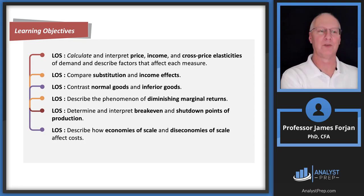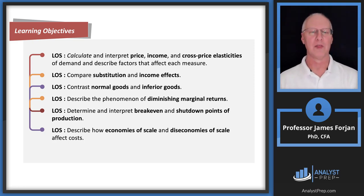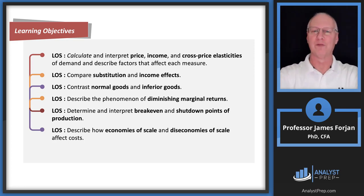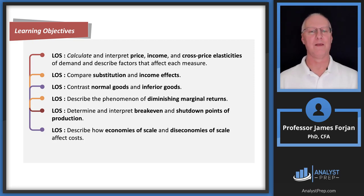The substitution effect: if the price of a grapefruit is $30 and the price of an orange is free, you're going to substitute the lower-priced good for the higher-priced good. Our income also determines something about our demand. If you go into the food store with a wheelbarrow full of $100 bills, you're going to buy everything — assuming you can replenish that wheelbarrow each week or month. We'll also cover diminishing marginal returns, break-even and shutdown points, and economies of scale.